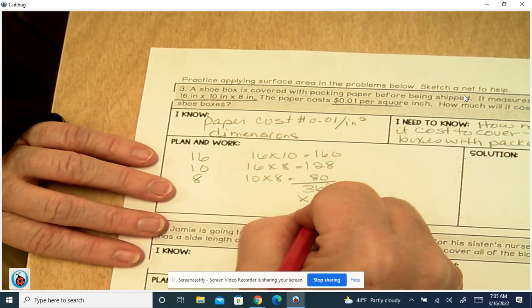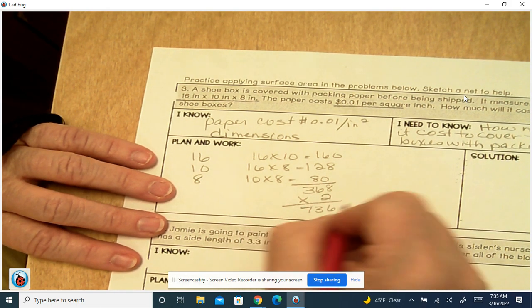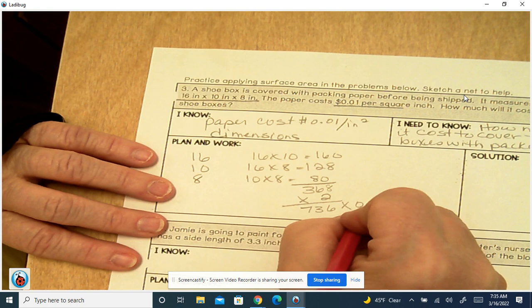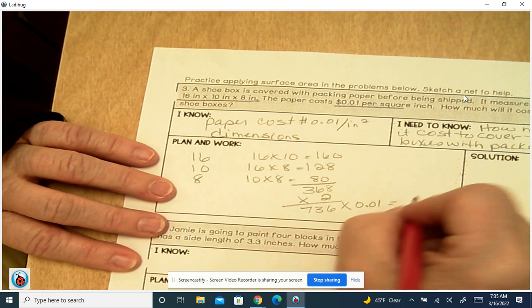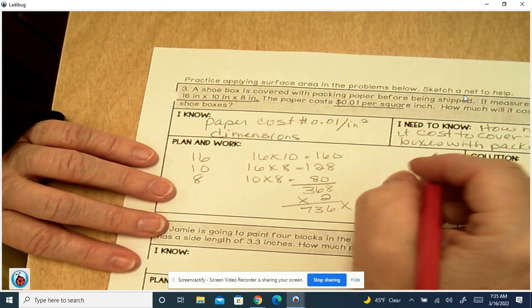And that's for three sides. So we multiply it by 2 and we get 736. And then we multiply that by the 0.01, and that gives us 7.36 cents per square inch.